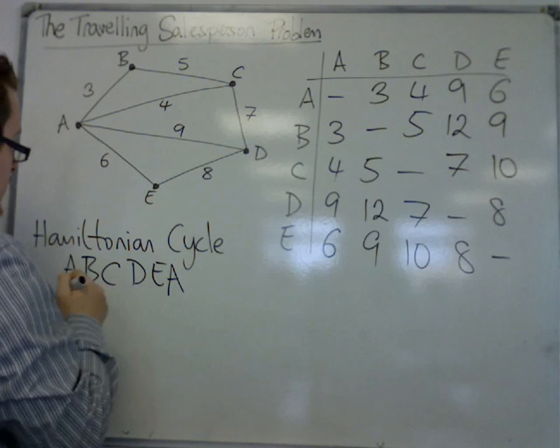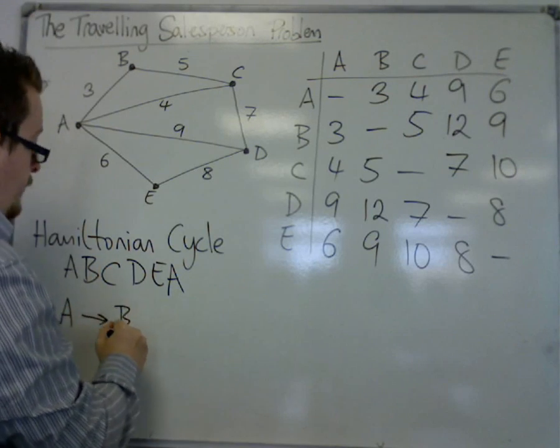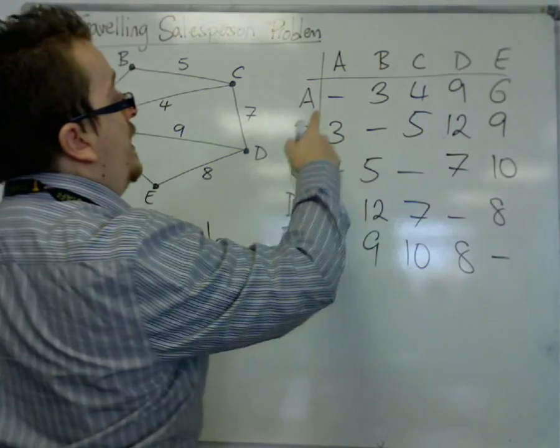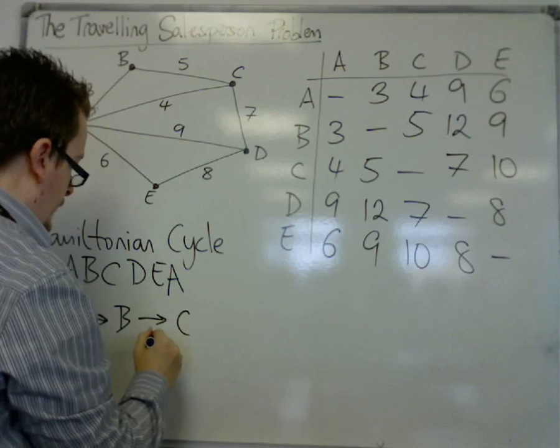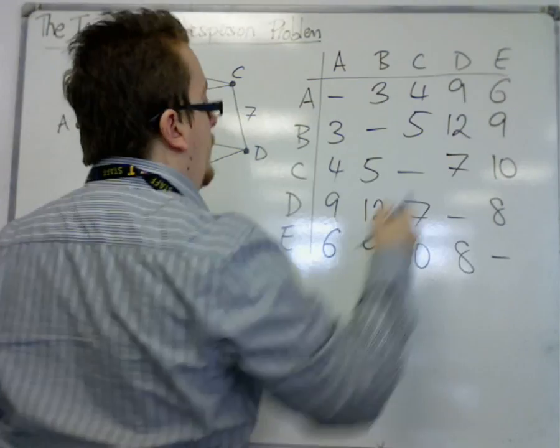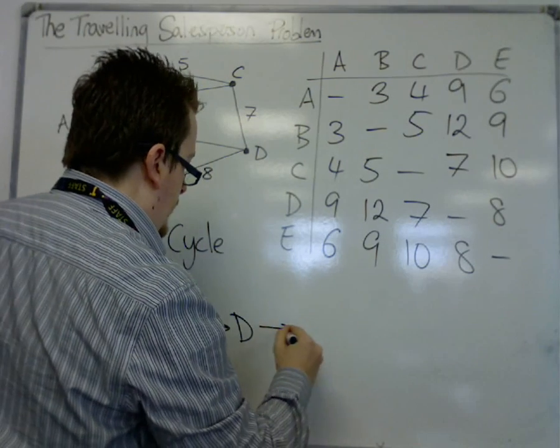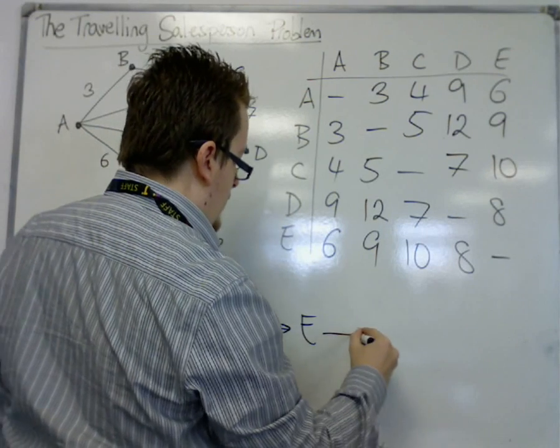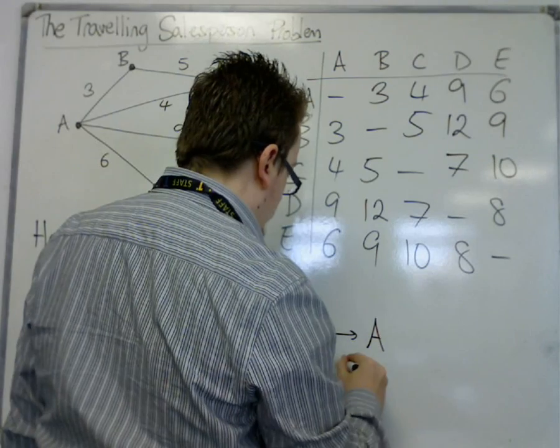going from A to B. So A to B is 3. Then I go to C, so from B to C is 5. Then from C to D is 7. Then from D to E is 8. And then from E to A is 6.